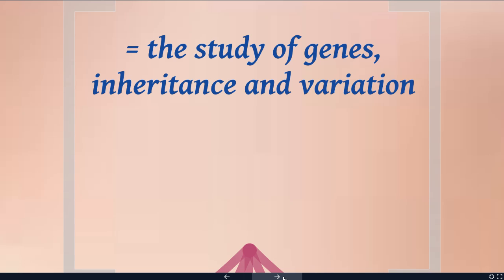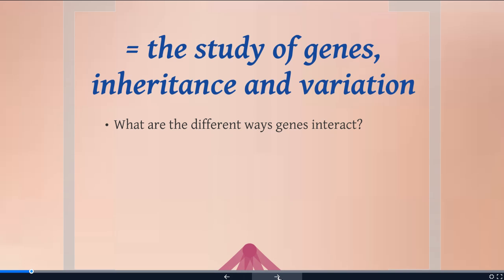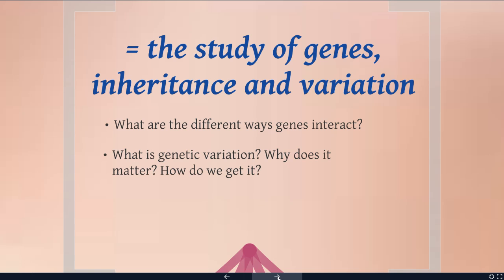Geneticists are going to try and answer a lot of different questions. How do different genes interact? We know that genes are sections of DNA that code for particular proteins. So if you have two or three different genes all being expressed, what is the result of those proteins interacting? So what is genetic variation? Why is it important and how do we get it? Why do I look different from my siblings? We came from the same genetic pool, so why don't all of us look the same?